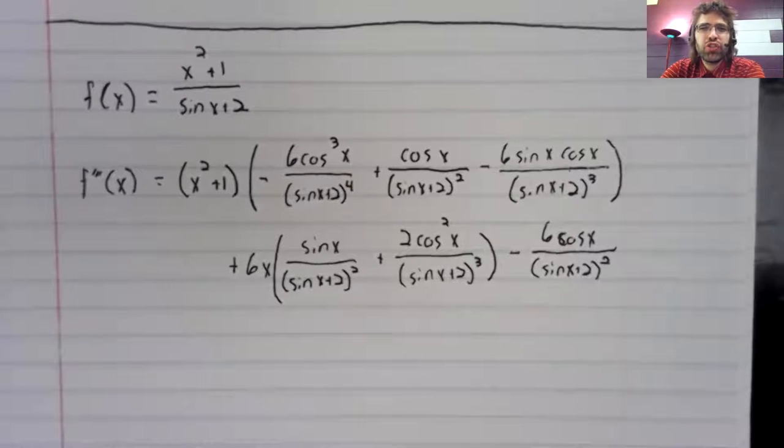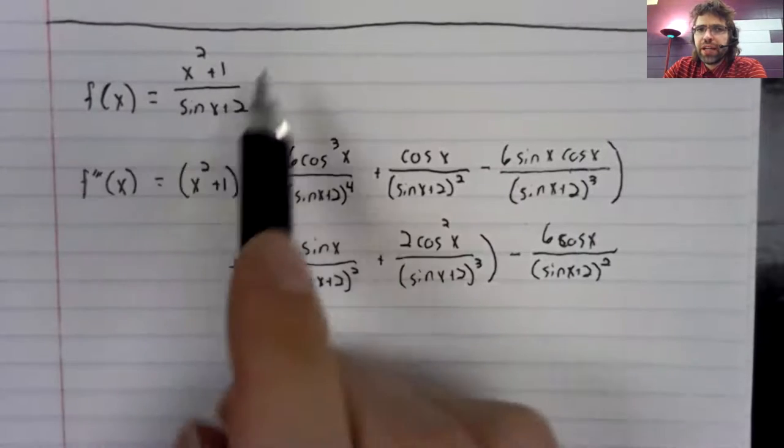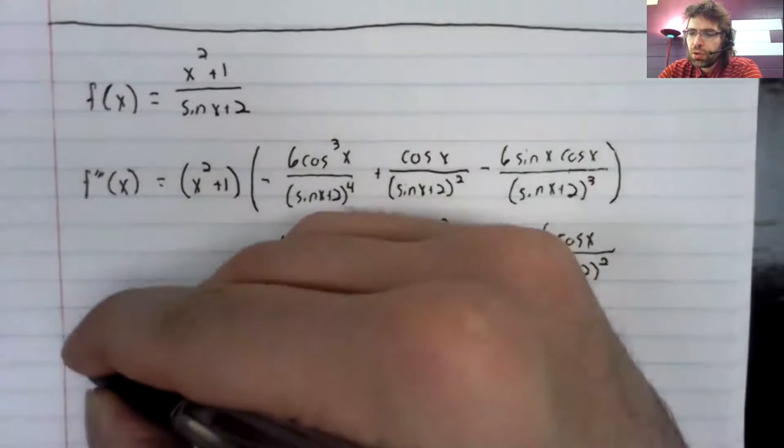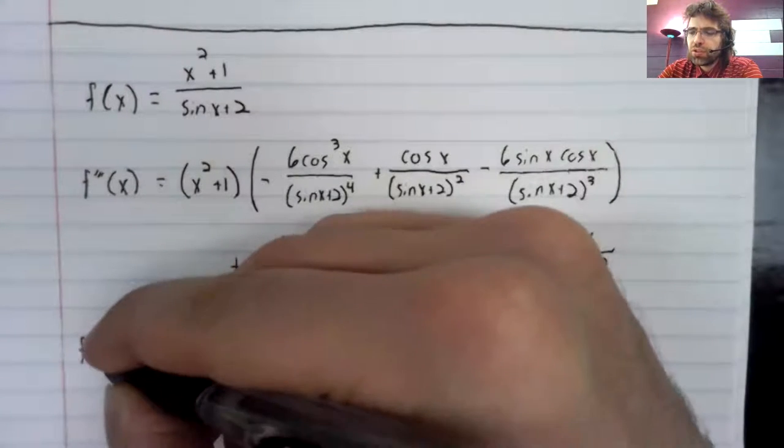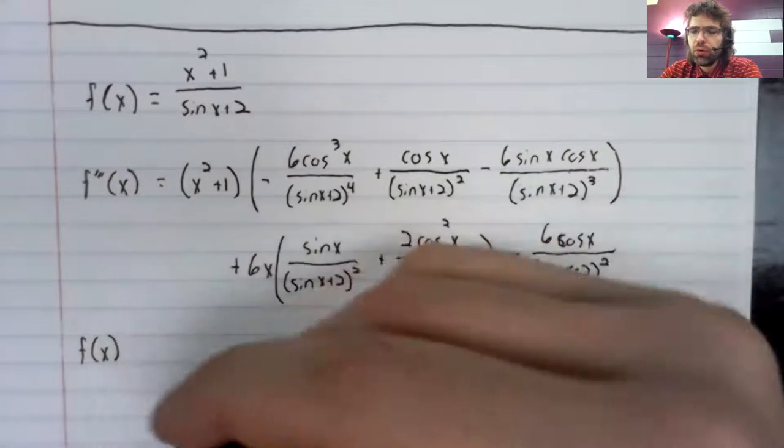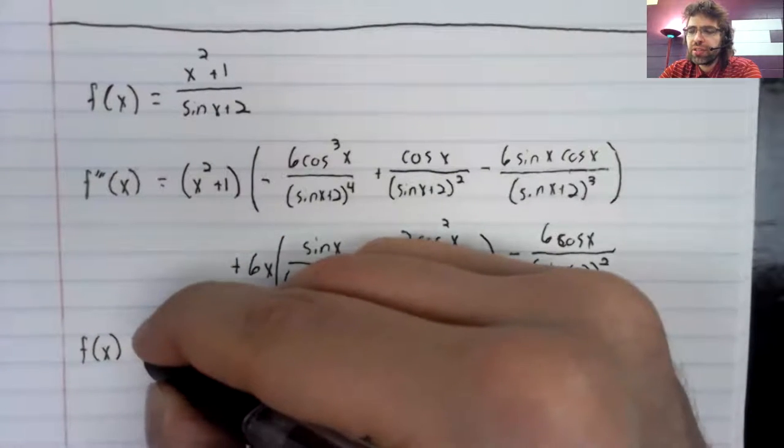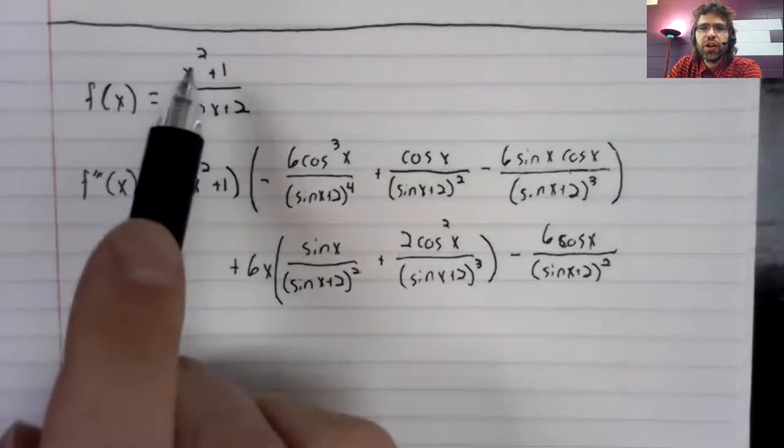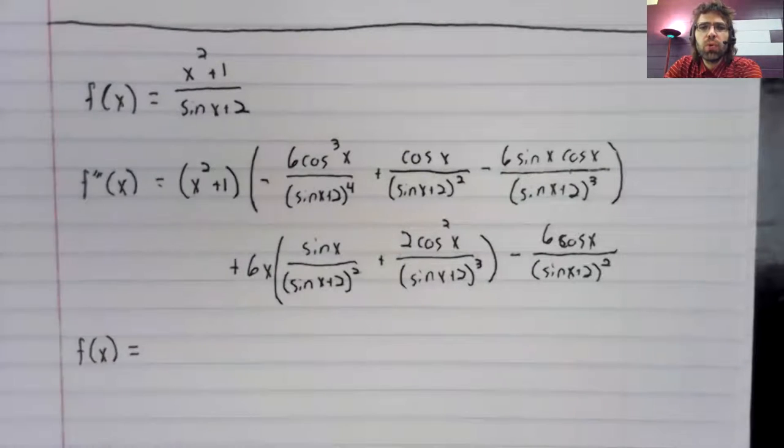You see, differentiating this has really made it a lot worse. Much more complicated. On the other hand, suppose you recognize somehow, we won't say how for now, although we'll get to it in the very next section, that this function is equal to a power series.